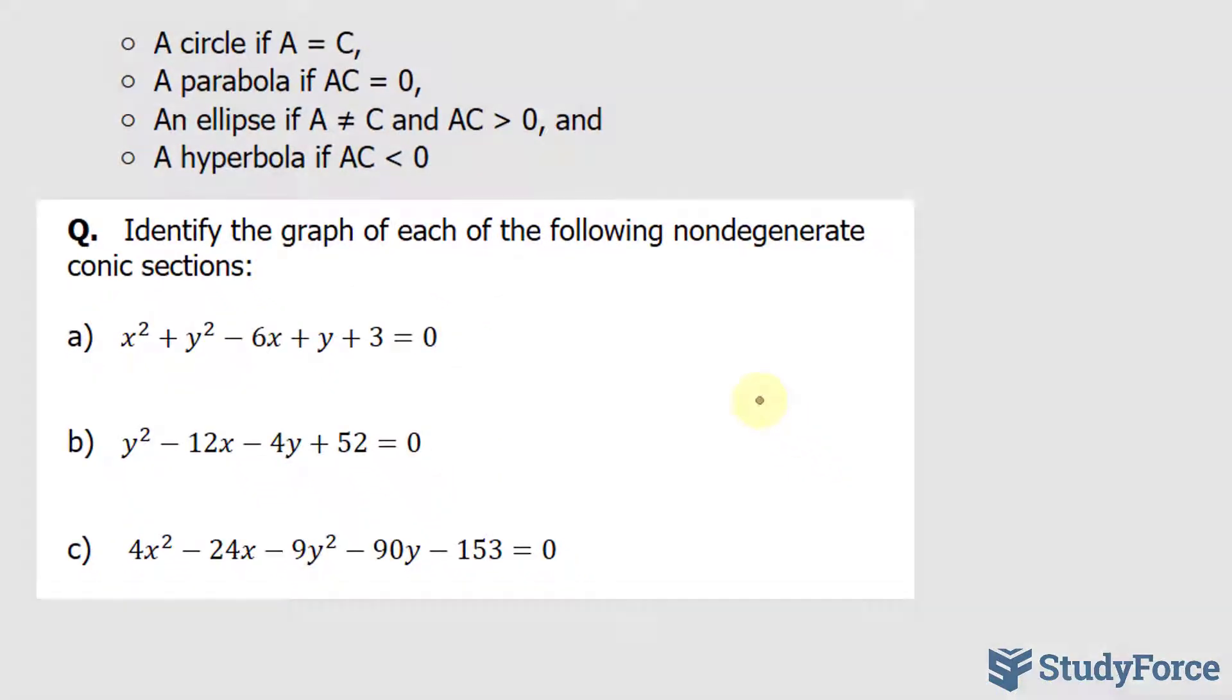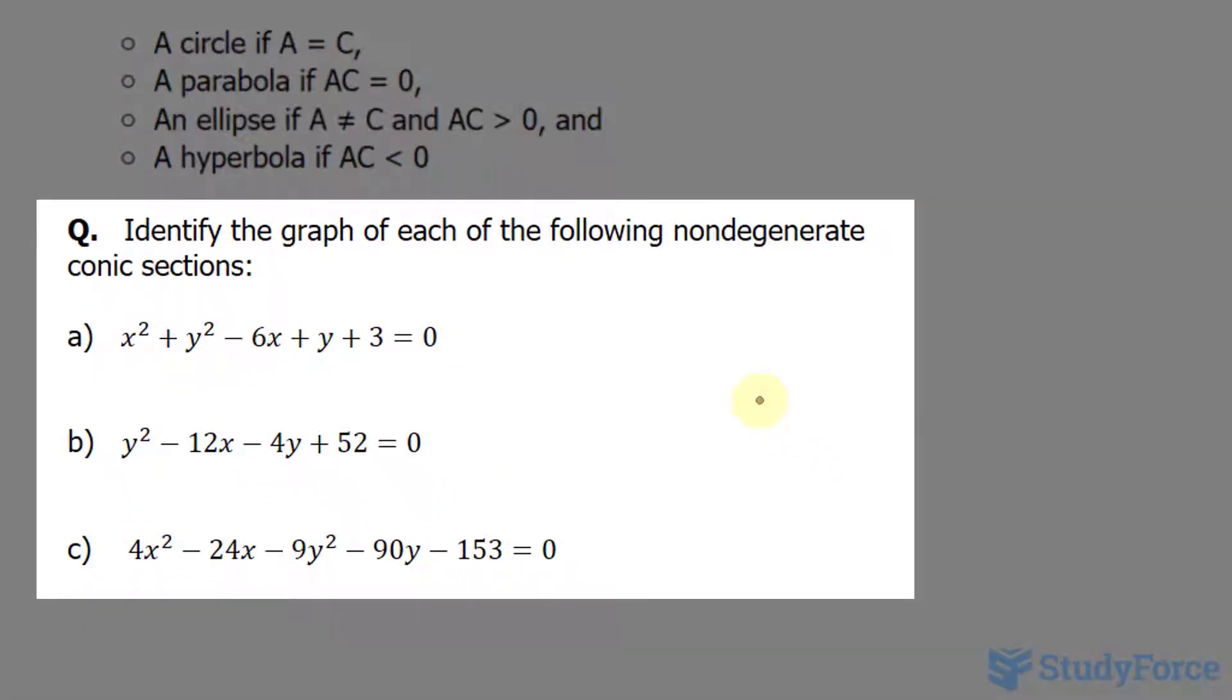The question reads: identify the graph of each of the following non-degenerate conic sections. Let's start with A.